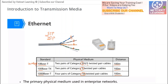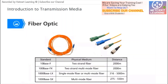Twisted pair uses a connector called RJ45. This connector is used to connect to PCs, to switches, and to any device connected to the network.